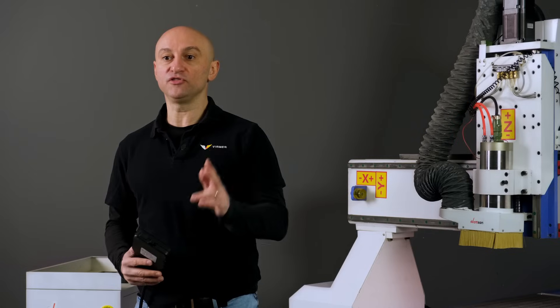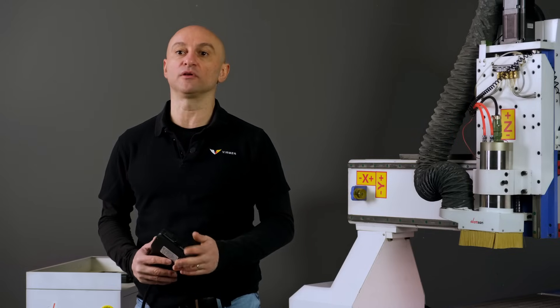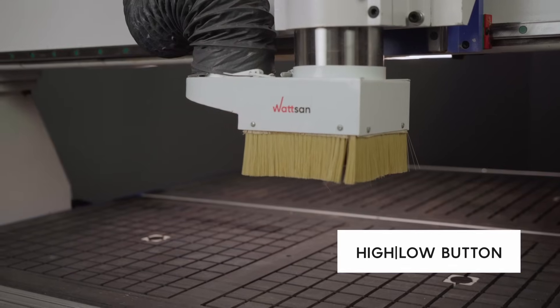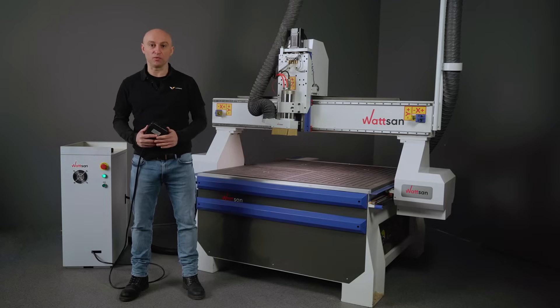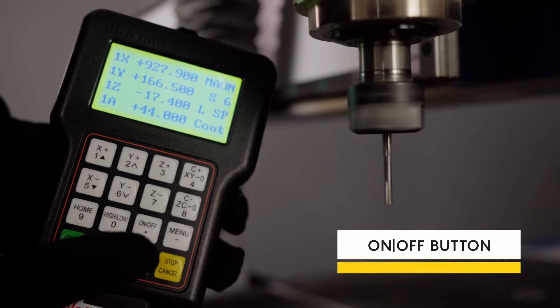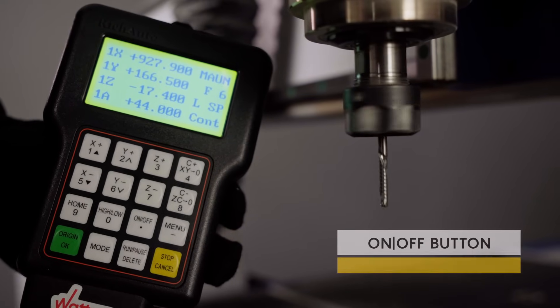To return the CNC router to the origin position by all of the axis, you have to press the Origin button twice. Also, Origin is used for chosen operation confirmation. High/Low is responsible for the manual control over speed—switch between the high and low ones. On/Off is quite simple: it turns on or off the spindle, and the bottom Menu obviously opens up the menu window.